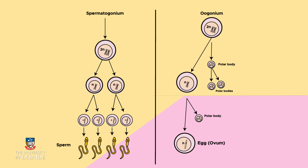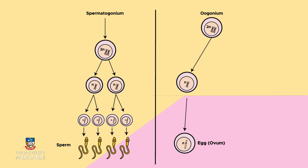But in females, each stem cell — called an oogonium — only gives rise to a single egg. This is okay because an egg becomes a baby, and most women only want one baby at a time. The remaining three cells that are produced are called polar bodies. They are much smaller than the egg because the egg steals most of the cytoplasm of the oogonium. Unfortunately for polar bodies, they don't have a long life and they quickly die and are discarded.